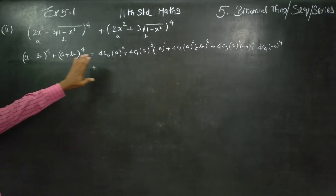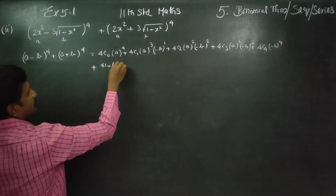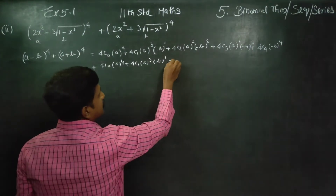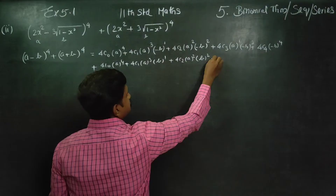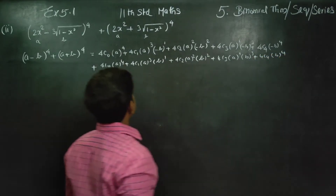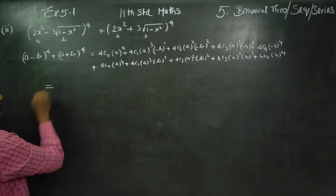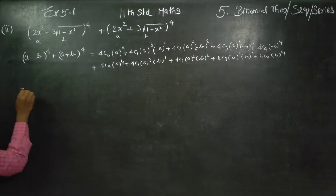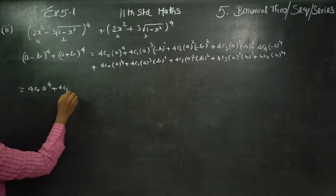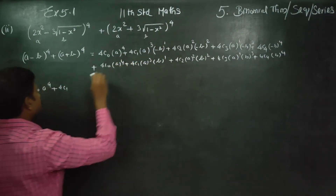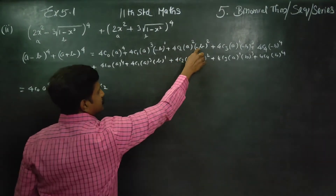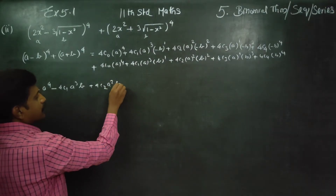Now for (a plus b) whole power 4: 4C0 times a power 4, plus 4C1 times a cubed times b, plus 4C2 times a squared times b squared, plus 4C3 times a times b cubed, plus 4C4 times b power 4.